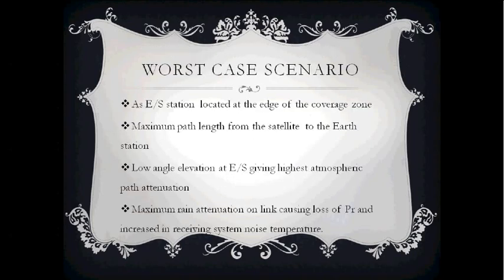In a worst case scenario, there are points such as an Earth-to-satellite station located at the edge-of-coverage zone, maximum path length from the satellite to the Earth station, low elevation angle giving highest atmospheric path attenuation, and maximum rain attenuation on the link causing loss of radiated power and increase in receiving system noise temperature.